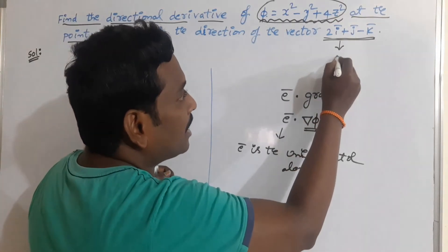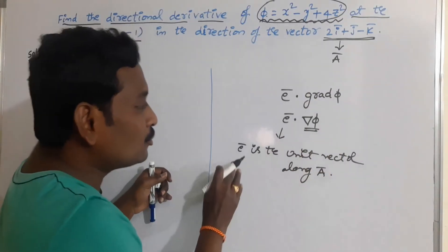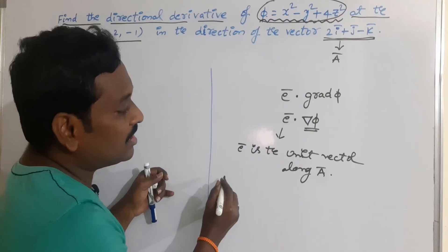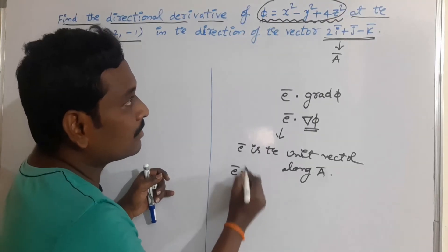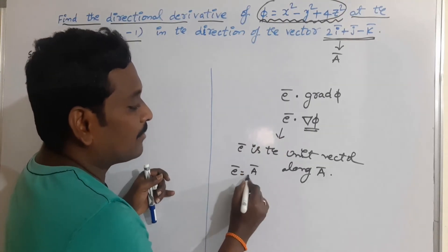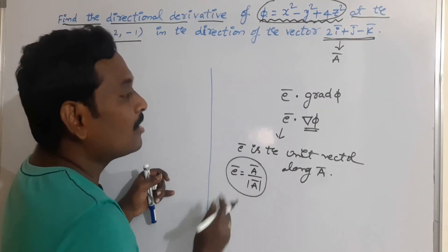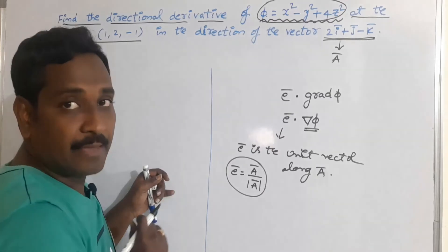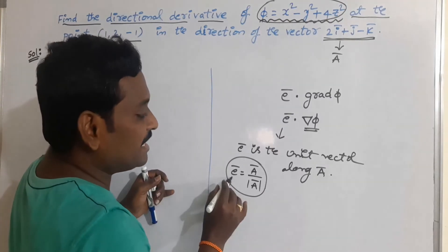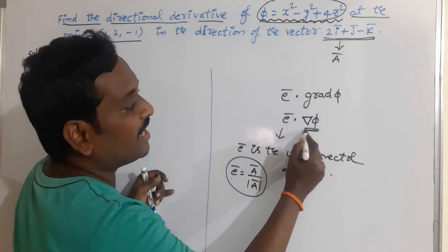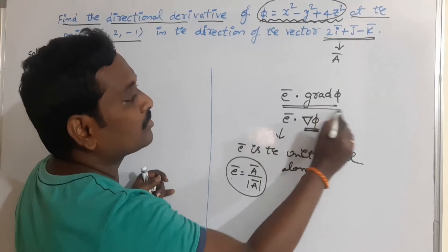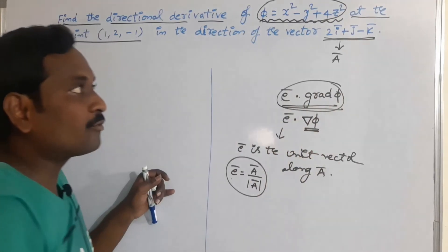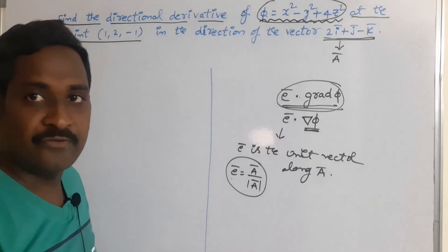This is the given vector a. We have to find out the unit vector of this vector. The formula for the unit vector is ē = a / |a|. After getting ē and ∇φ, we can take the dot product of both, ē · grad φ, which gives the directional derivative of the given scalar point function.